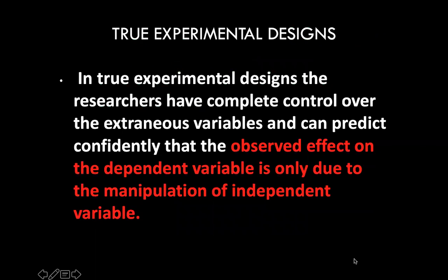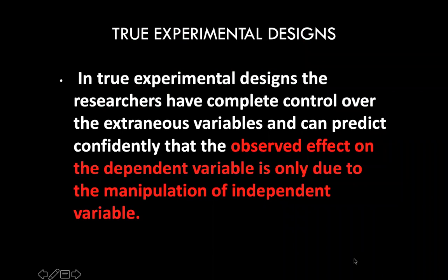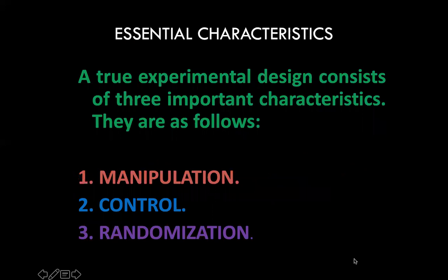In true experimental design, the researchers have complete control over external variables and can predict confidently that the observed effect on the dependent variable is only due to the manipulation of the independent variable. A true experimental design consists of three important components: manipulation, control, and randomization.